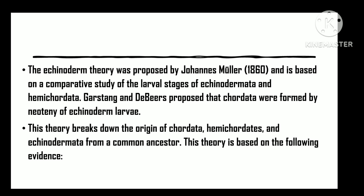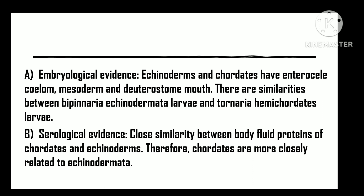Embryological evidence: Both echinoderms and chordates have enterocoelous coelom formation — that is, mesoderm — and a deuterostome mouth. There is a resemblance between the bipinaria larvae of echinoderms and the tornaria larvae of hemichordates. Serological evidence: There is a close similarity between the proteins of the body fluids of chordates and echinoderms; hence chordates are more closely related to echinoderms.